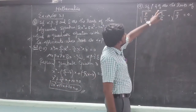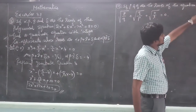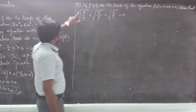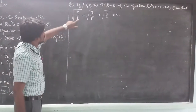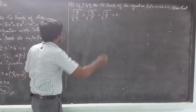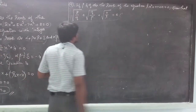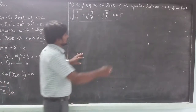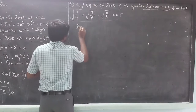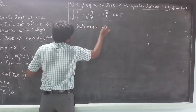Next problem: if P and Q are the roots of the equation Lx² + Nx + N = 0, you can show that √(P/Q) + √(Q/P) + √(N/L) = 0. This is one important result — show that this value is 0. This is an important question.